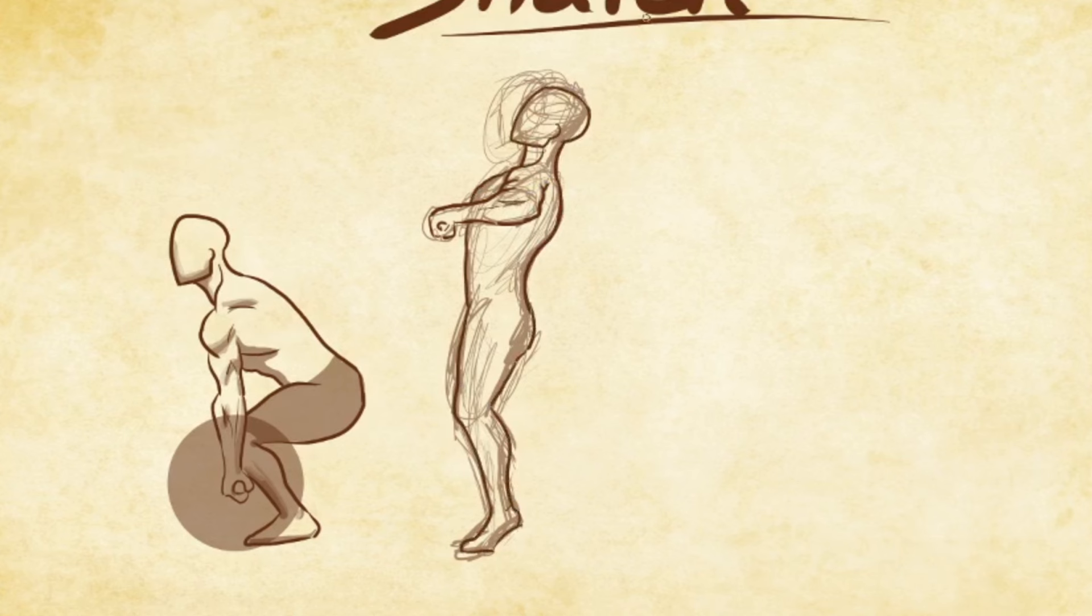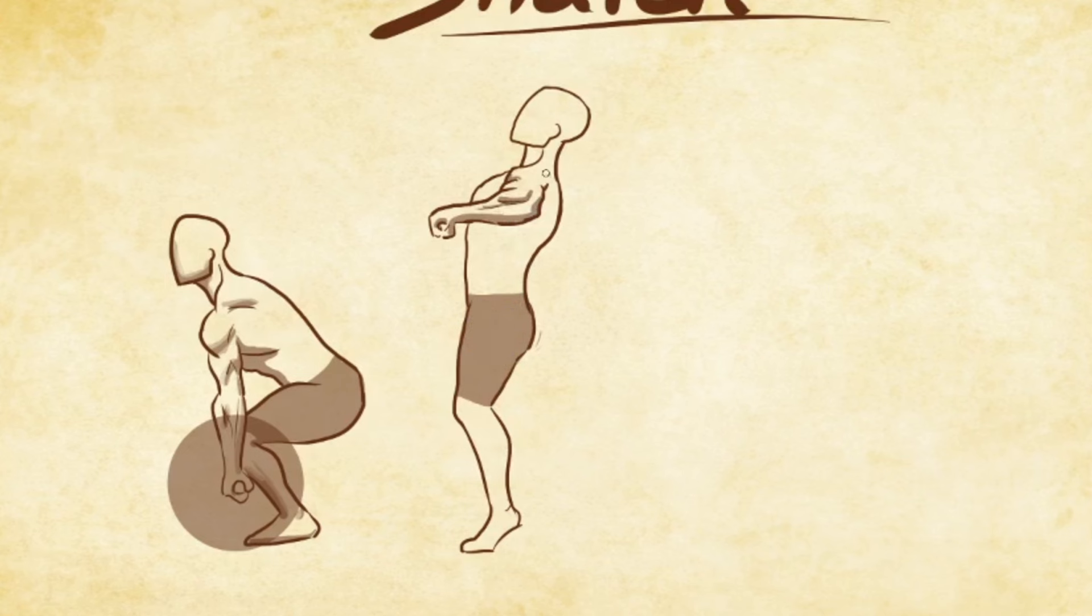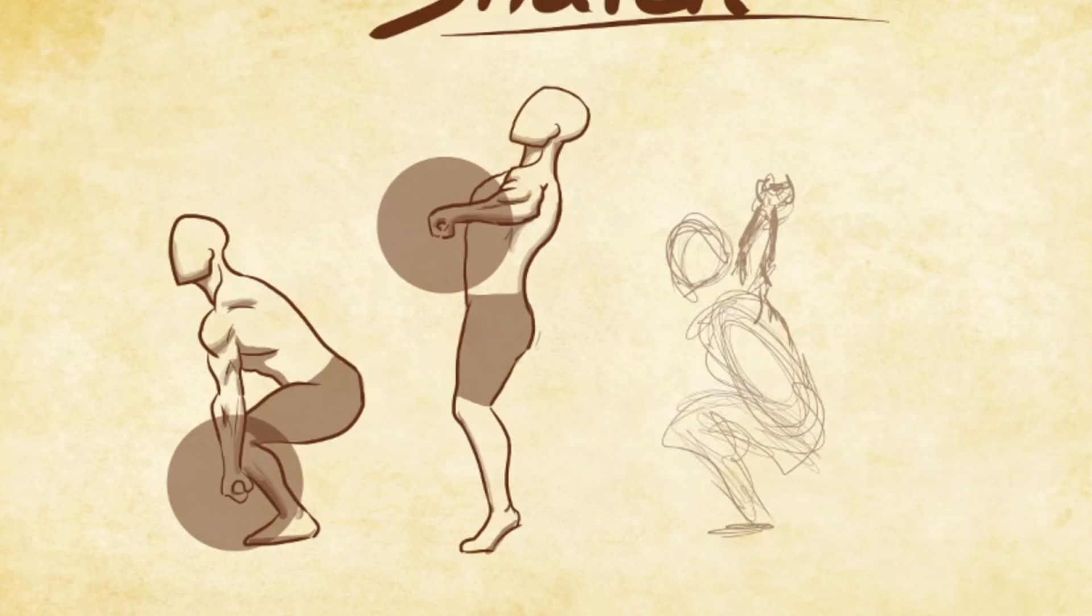...the lifter explosively extends the hips, knees, and ankles. This is that same jump phase which explosively launched the bar vertically in the clean and jerk with one major exception. This time the bar must travel completely overhead.